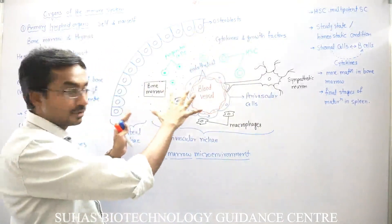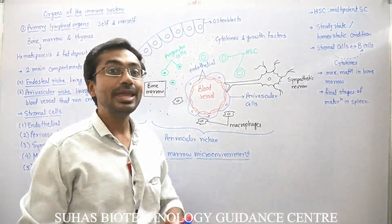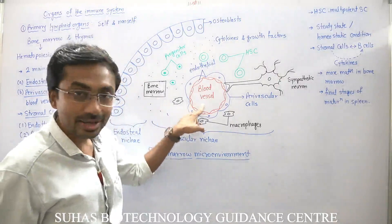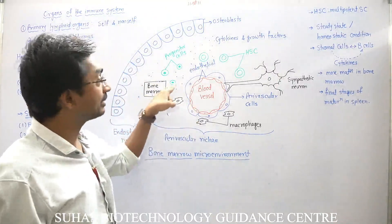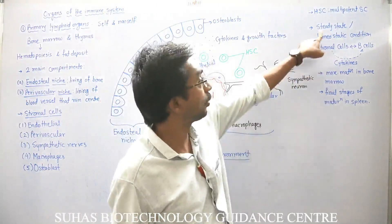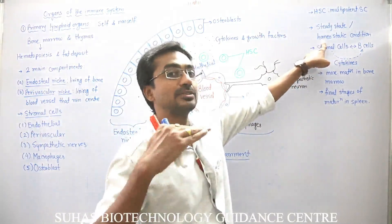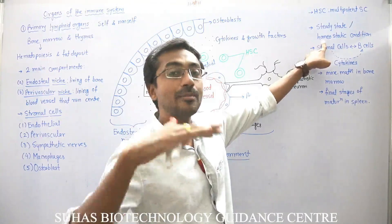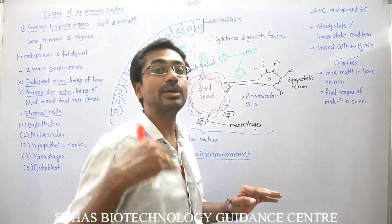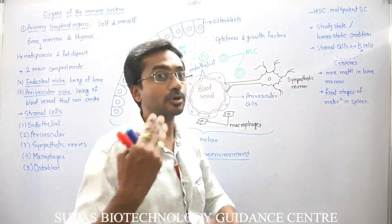So many cytokines and growth factors are present inside the bone marrow to regulate the complete process of hematopoiesis. In case of any infection, innate immunity cells release more cytokines; these signaling molecules reach the bone marrow through blood and stimulate the hematopoietic stem cell for more hematopoiesis. In steady state — the homeostatic condition with no pathogen challenge — hematopoiesis takes place at a slower rate and most hematopoietic stem cells remain dormant or quiescent. In case of infection, more hematopoietic stem cells are activated.